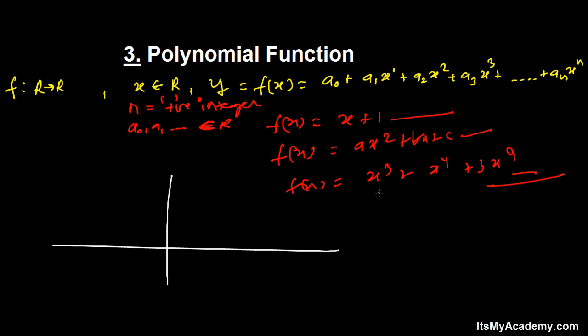The graph of a polynomial function cannot be predicted. It's not constant like the identity function, which gives you a particular line.